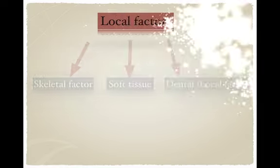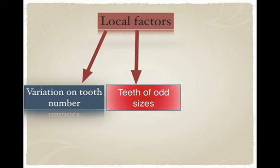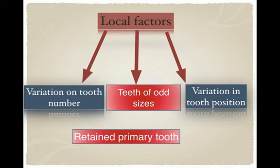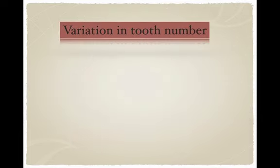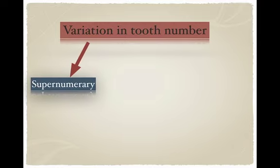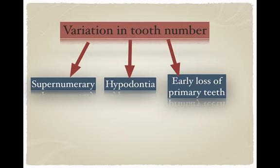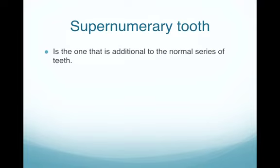The third etiology is local or dental factors. We can divide these into: variation in tooth number, teeth of odd size, variation in tooth position, and retained primary teeth. For this lecture, we're going to talk about variation in tooth number, while the rest will be covered in the next lecture. Variation in tooth number covers three topics: supernumerary teeth, hypodontia, and early loss of primary teeth.